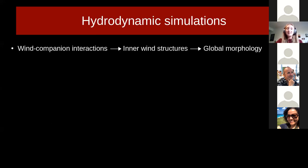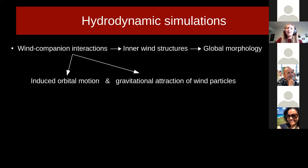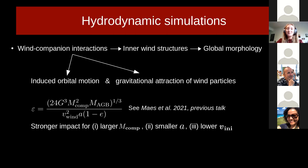We use these simulations to investigate in detail how the wind companion interactions in circular and eccentric orbits result in different types of inner wind structures around the companion and AGB star and how these different inner wind structures on their turn result in various global morphologies. The companion shapes the wind morphology by two primary effects: the first one being the induced orbital motion of both stars around the center of mass, and secondly, the gravitational attraction of matter by the companion. The physical properties of the binary system and of the AGB wind will then determine the relative strength of these effects and the global shape of the outflow.